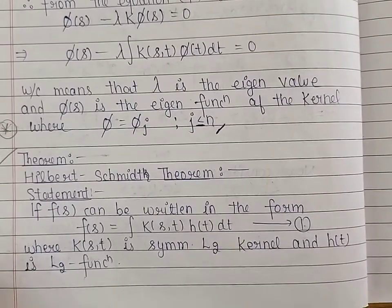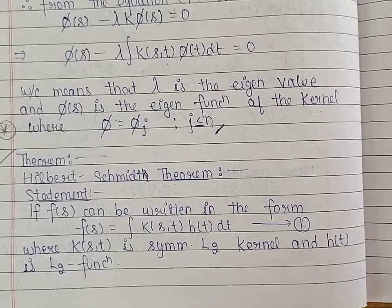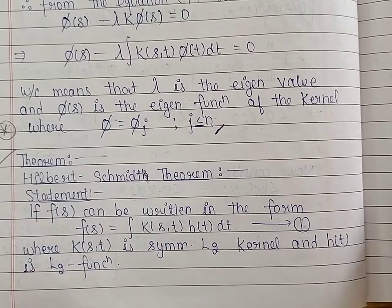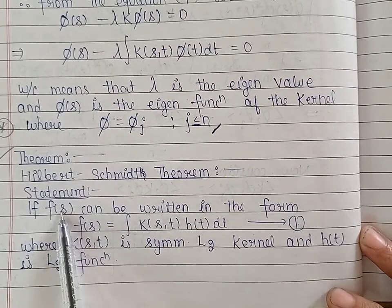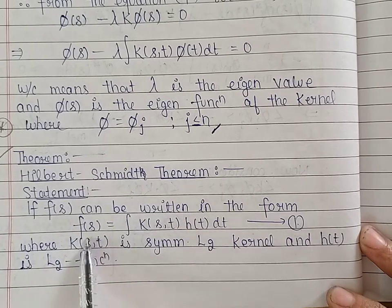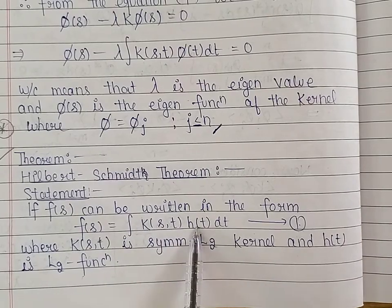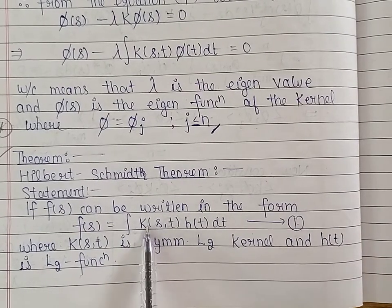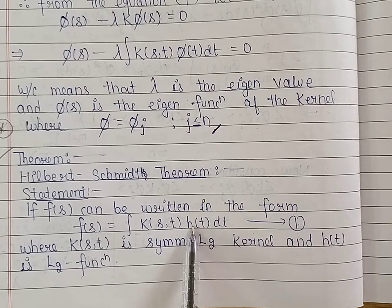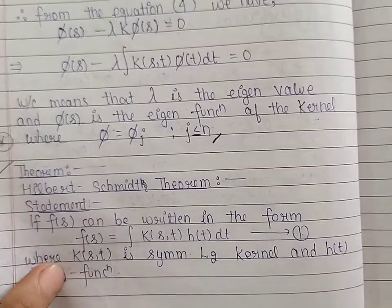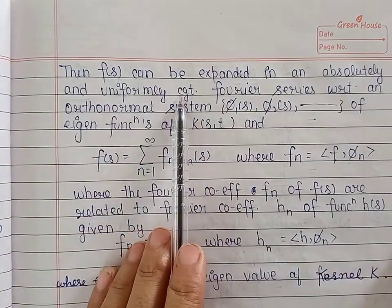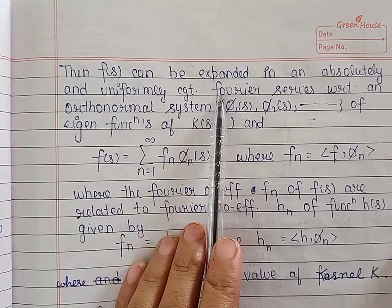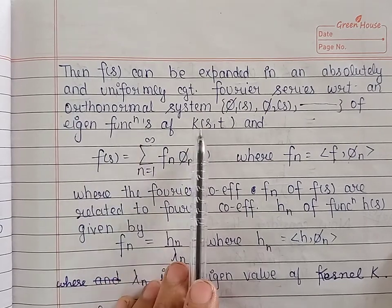Good morning students. Today we will discuss an important theorem in the theory of symmetric integral equations — the Hilbert-Schmidt theorem. It states that if we have a function f which can be written in the form f(s) = integral of k(s,t) h(t) dt, where the kernel k is a symmetric square-integrable kernel and the function h is also a square-integrable function, then we can expand f in an absolutely and uniformly convergent Fourier series with respect to an orthonormal system of the eigenfunctions of the kernel k.